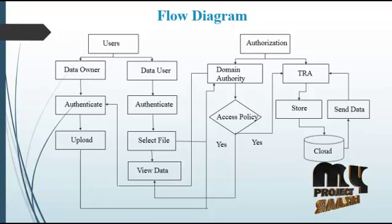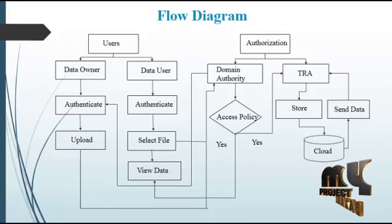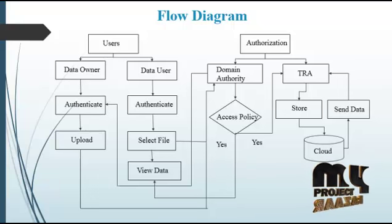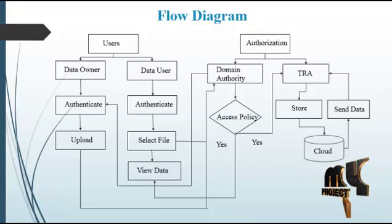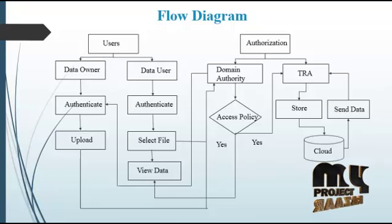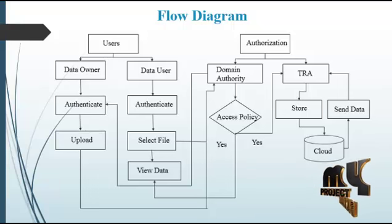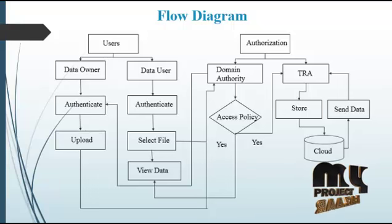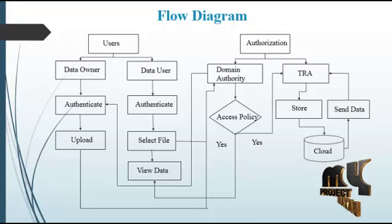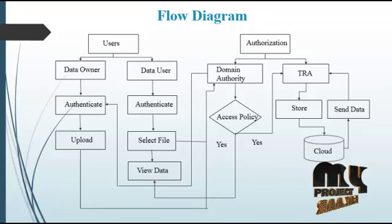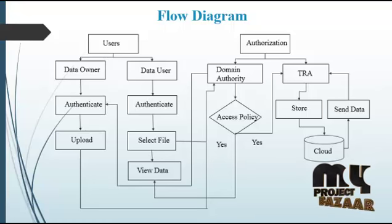First, the data owner wants to upload a file. They first register into the system by providing their name, email ID, and password. They then send the request to the authorization people. The domain authority checks their details and then passes them to the DRA, which checks and provides a key to log into the system.